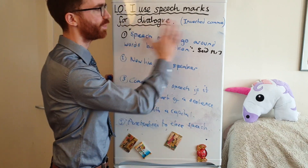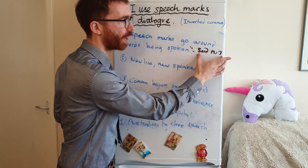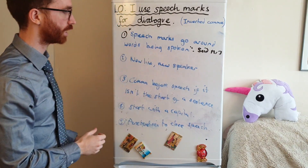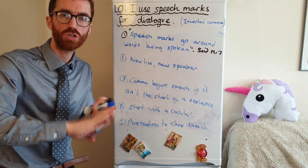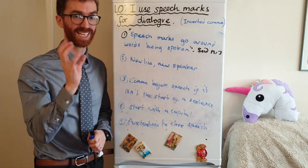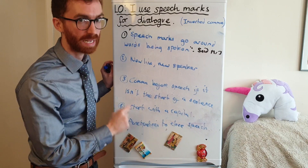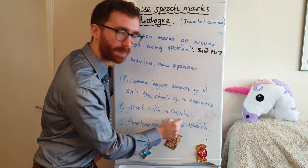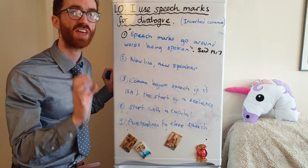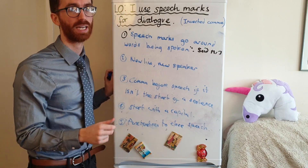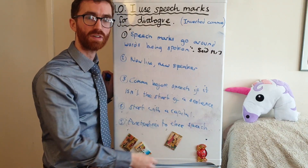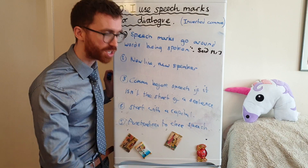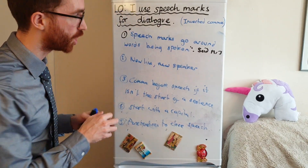Let's go through just a couple of rules to make sure we remember them. Speech marks obviously go around the words being spoken — they don't go around the bit where you say who said it, because no one says that. New line, new speaker — really important, one of the key things when it comes to speech. Commas go before speech if it's not at the start of a sentence. Speech always starts with a capital letter, because it is the start of their sentence, and all sentences start with a capital letter.